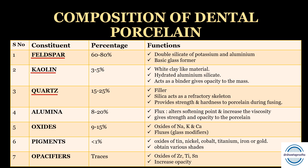Fourth is alumina — aluminium oxide — present at 8 to 20%. It acts as a flux by altering the softening point and increasing the viscosity of porcelain during firing. It also gives strength and opacity. Next are the oxides, present at 9 to 15%; they are the basic fluxes and glass modifiers. Oxides of sodium, potassium, and calcium are used. They lower the fusion temperature and increase viscosity to control flow. However, if the concentration is too high, it reduces the chemical durability of the glass.